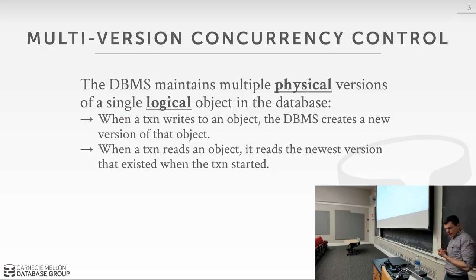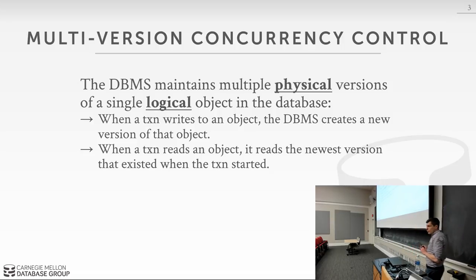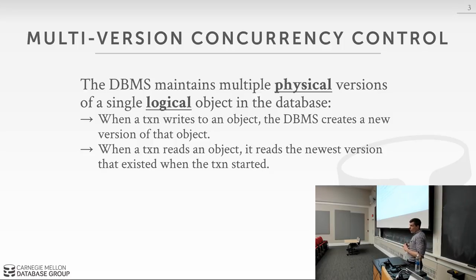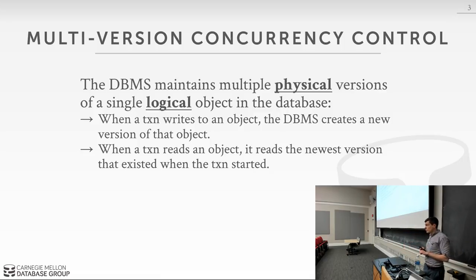Today we're going to talk about multi-version concurrency control. This is a slight misnomer in the term because it's not another concurrency control protocol in the way that we talked about two-phase locking and timestamp ordering. Rather, it's a way to architect the system when you have concurrent operations by relying on and maintaining multiple versions.